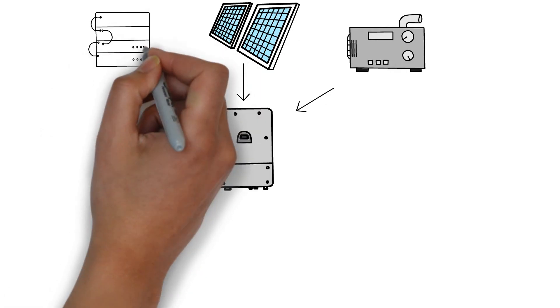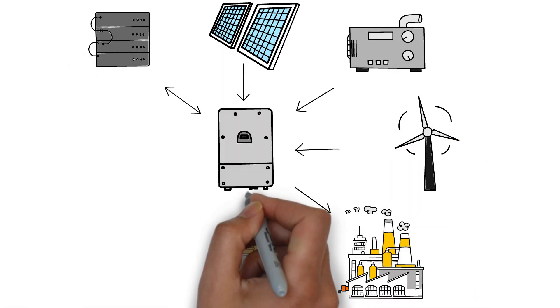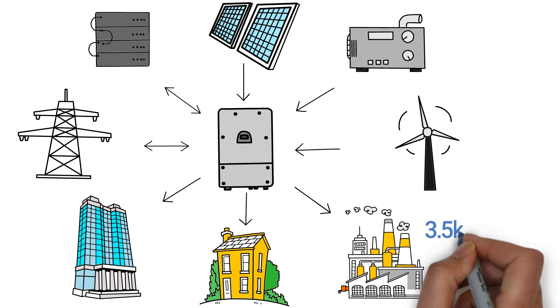SunSync now provides a stable, uninterrupted power supply ranging from 3.5 kilowatts to much larger systems over 100 kilowatts.